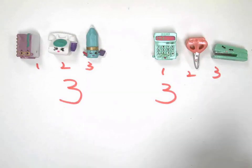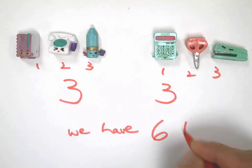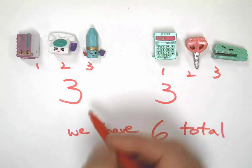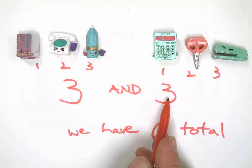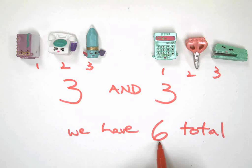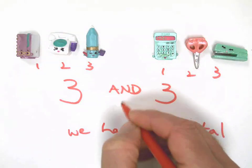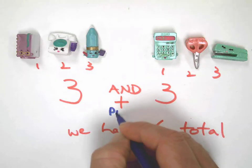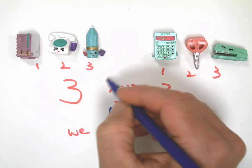One, two, three — right? And how many are over here? One, two, three — that also makes three! How many do we have total? You can just count all of them, right? We have six total. So three and three gives us six.